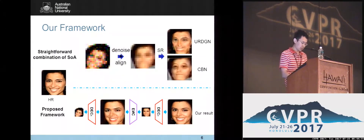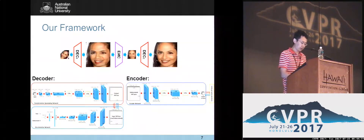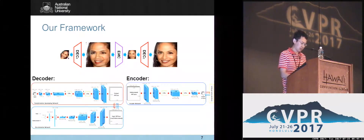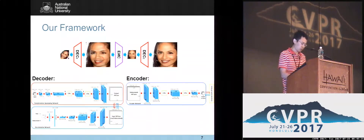Instead of denoising and aligning low-resolution faces separately, we interweave a spatial transformer network and deconvolutional layers to construct our transformative upsampling network. We then apply pixel-wise intensity similarity as well as class-wise similarity as our loss function. For the encoder, we enforce appearance similarity between the downsampled low-resolution faces and the downsampled version of the ground truth.